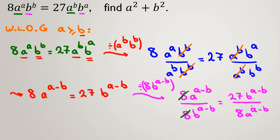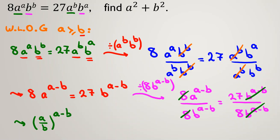Let me correct and rewrite cleanly. After canceling b to the b, we can apply the power rule to write: a over b, all to the power of (a minus b), equals 27 over 8. As a shortcut, you can use cross multiplication to take the 8 and the b to the other side and reach this result more quickly.